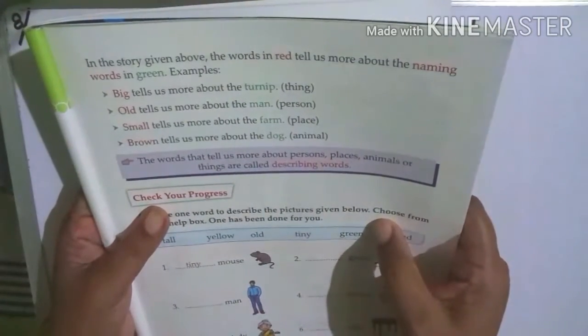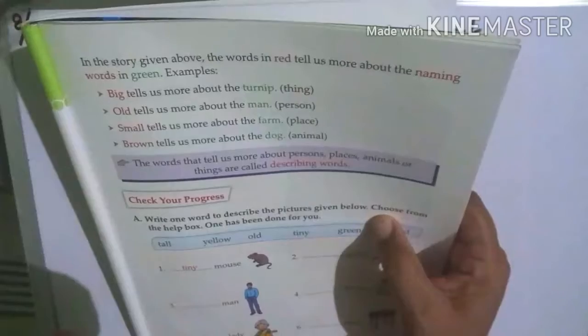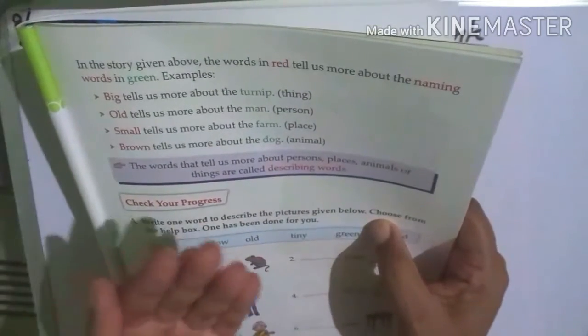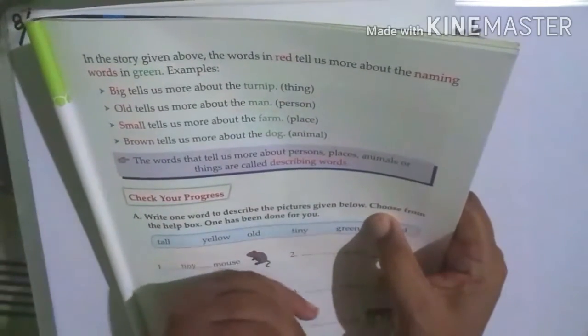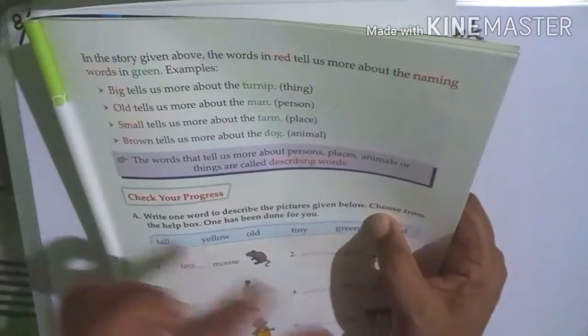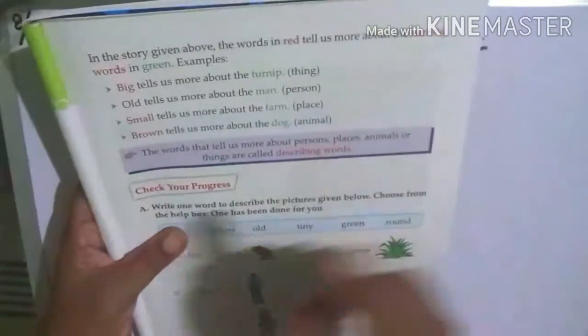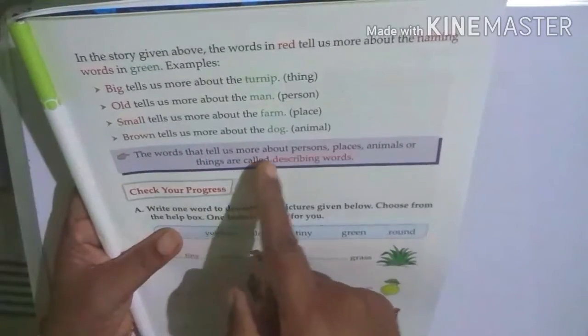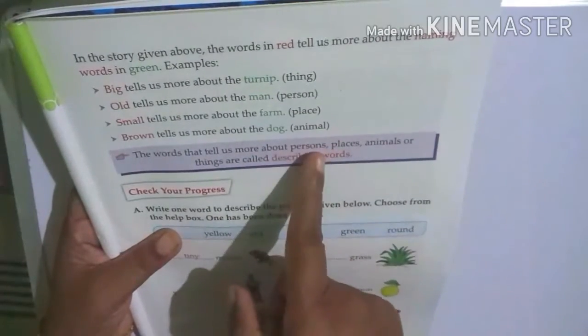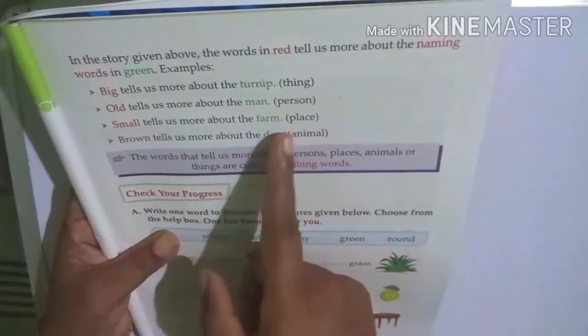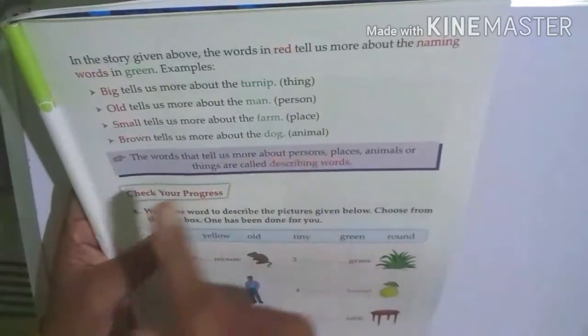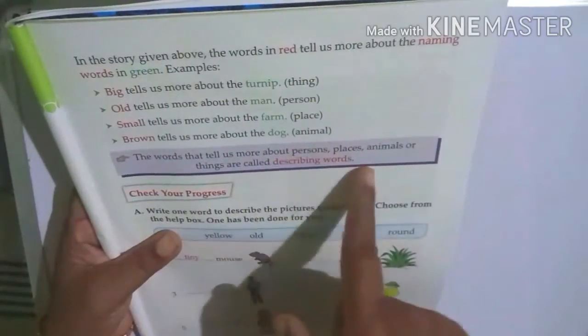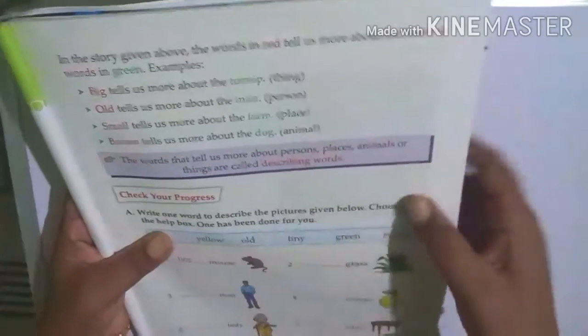Children, the words that tell us more about the person, place, animals, things are called describing words. The words that tell us more about person, place, animals, things are called describing words.